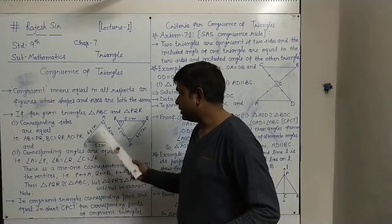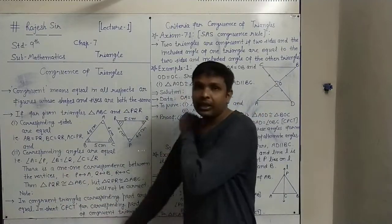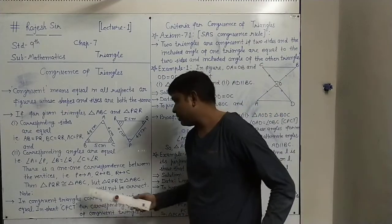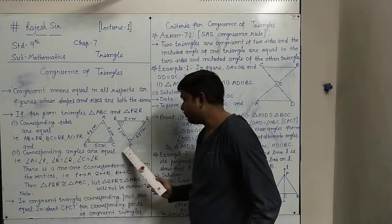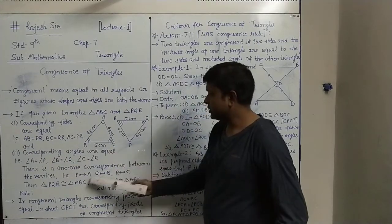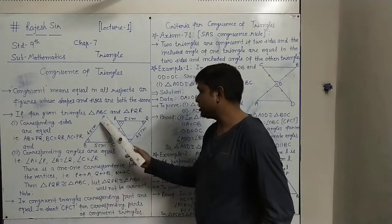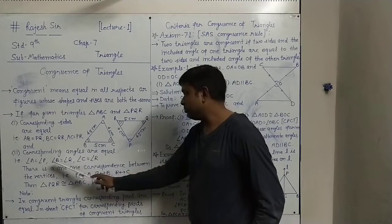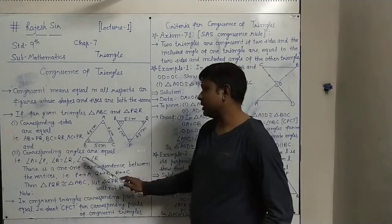If this happens in two triangles, we can say there is a one-to-one correspondence between the vertices. We have to identify which pair of vertices are corresponding. P corresponds to A, Q corresponds to B, and R corresponds to C — because angle P equals angle A, angle Q equals angle B, and angle R equals angle C. All three correspondences are established between the two triangles.